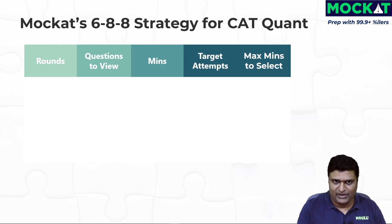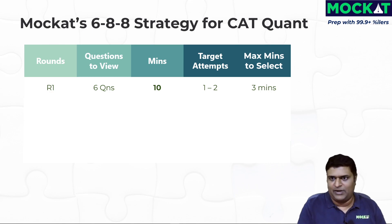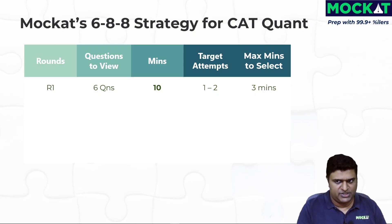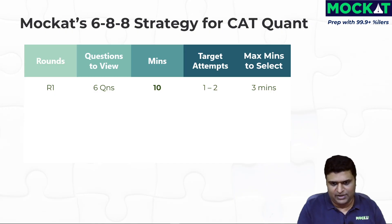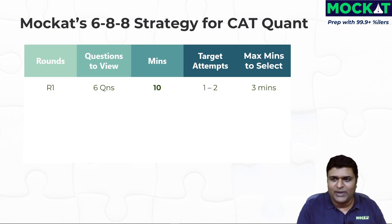So what is the 6-8-8 strategy for CAT quant? Break it into three rounds. You've just finished your DILR section and come into quant with 40 minutes. For the first 10 minutes, look at six questions, choose one to two of them, and attempt them. Getting one to two correct puts you in the 80th to 90th percentile and clears sectional cutoffs for almost every college. To choose those one to two easy questions, give yourself a maximum of three minutes — don't rush through it.